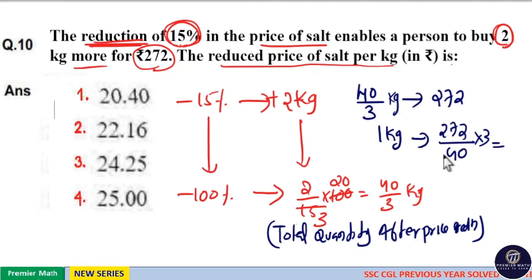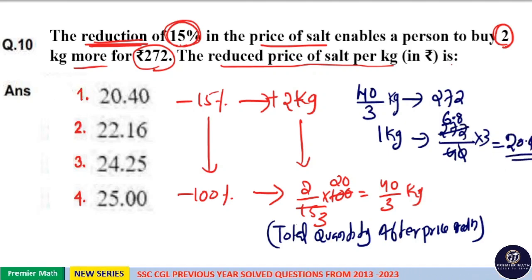4 goes 6 times in 27 remaining 3, 4 goes 8 times in 32, so divided by 10 means 6.8. 8 into 3, 6 times 3 is 18, so total comes to 20.4 rupees per kilogram.